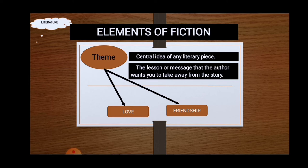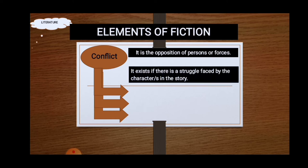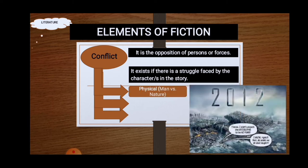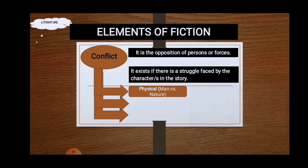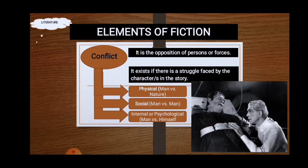Next is conflict. Conflict is the opposition of persons or forces. It exists if there is a struggle faced by the characters in the story. Here are three main types of conflict. Let's identify in a little short: Man versus nature or the physical, Man versus man or social, and Man versus himself or internal or psychological. Take note that these standard classifications use man as a universal term, including women as well.